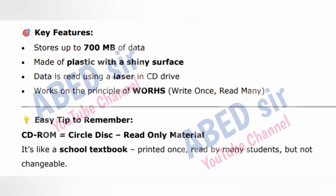Key features of CD-ROM: stores up to 700 megabytes of data; made of plastic with a shiny surface; data is read using a laser in the CD drive; works on the principle of write once, read many. Easy tip to remember: CD-ROM is like a school textbook — printed once, read by many students, but not changeable.